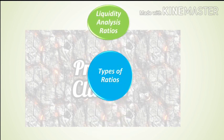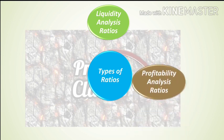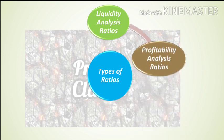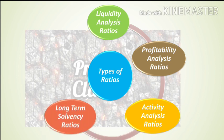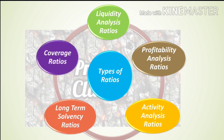The first one is Liquidity Analysis Ratio, the second is Profitability Analysis Ratio, the third is Activity Analysis Ratio, the fourth is Long Term Solvency Ratio, and the fifth is Coverage Ratio. So 5 types of ratios are available for an organization, a bank, or financial institutions.